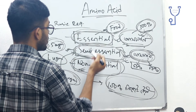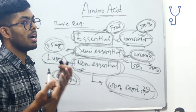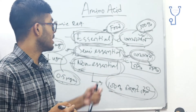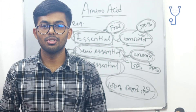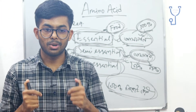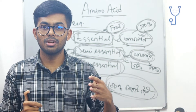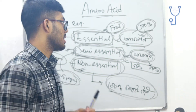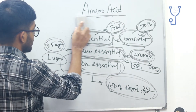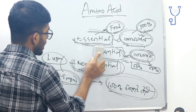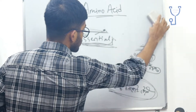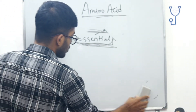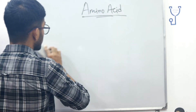Our body is dependent on essential amino acids — they are mandatory. The main function is how we can work. Essential amino acids are very important. If we have good food value, we can obtain essential amino acids.